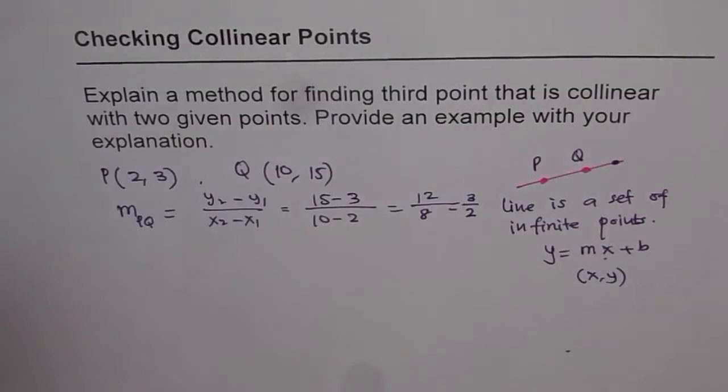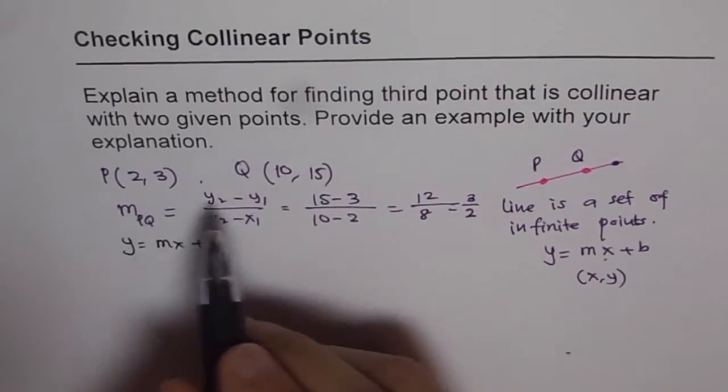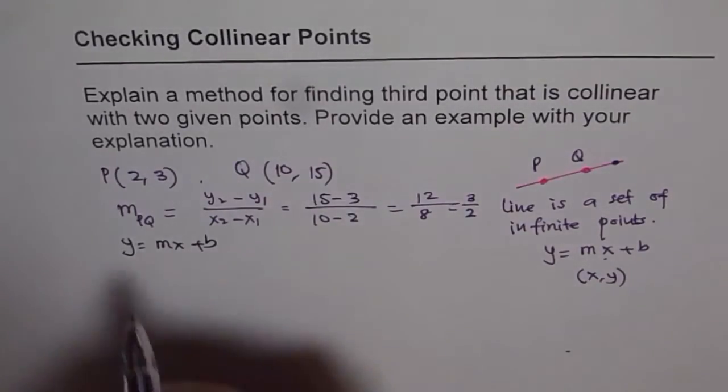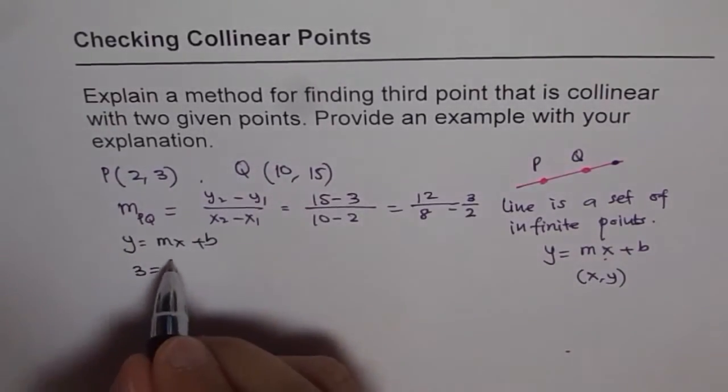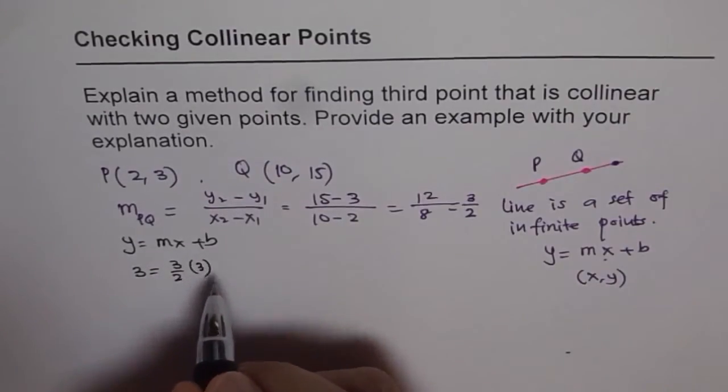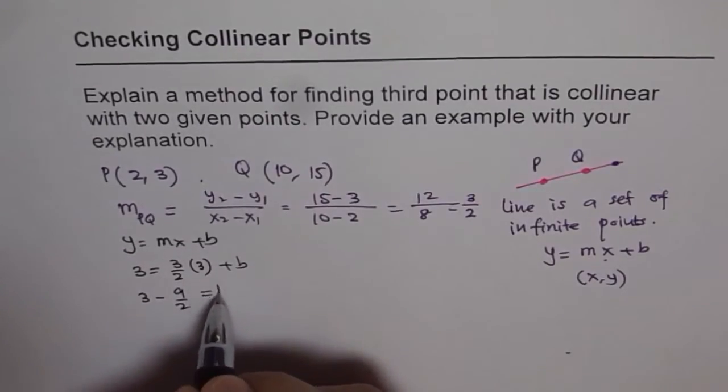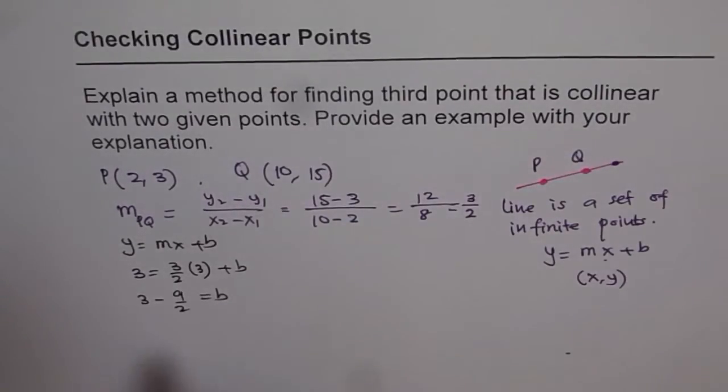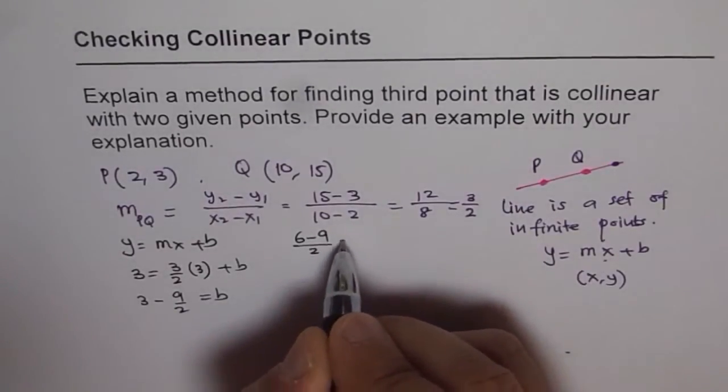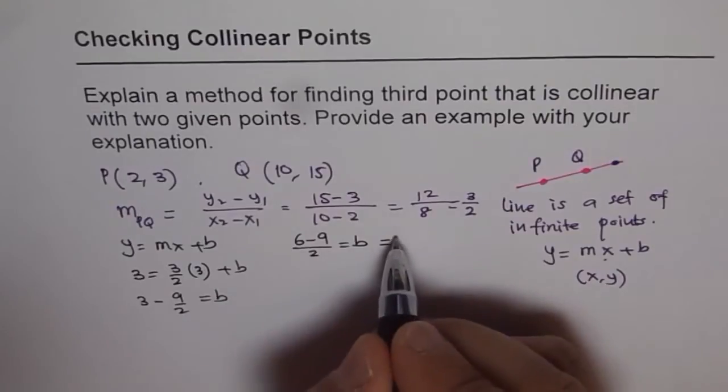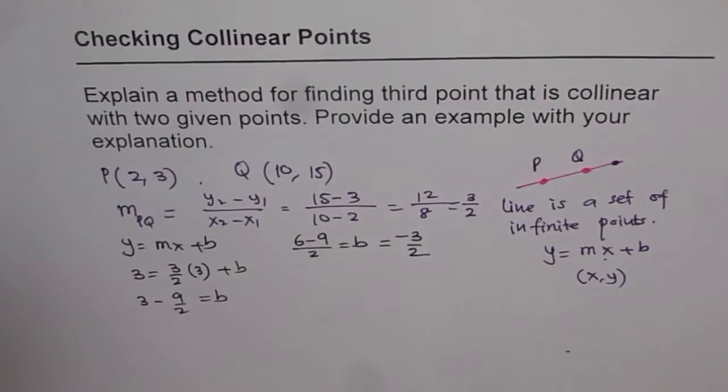So we will use the line equation which is Y equals MX plus B. We can use either one of the points and the given slope to find the equation of the line. So we can use 2 and 3. Y value is 3 for us, slope 3 over 2 and X value is 3 for us, plus B. That gives us 3 minus 9 over 2 equals B. From here, we can find the value of B as 3 times 2 is 6. So we have 6 minus 9 over 2 equals B, which equals minus 3 over 2. So B is minus 3 over 2.